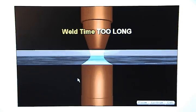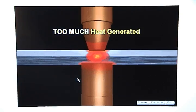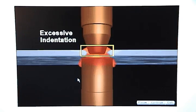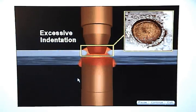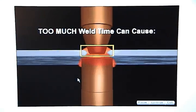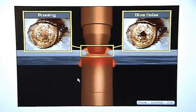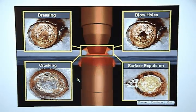If the weld time is too long, the current will generate too much heat and the weld tips will sink deep into the metal, thereby creating excessive indentation. Too much weld time can also cause brassing, blow holes, cracking, and surface expulsion.